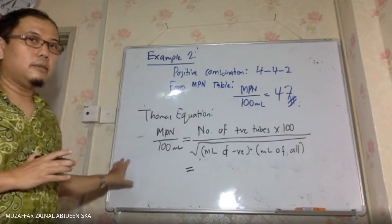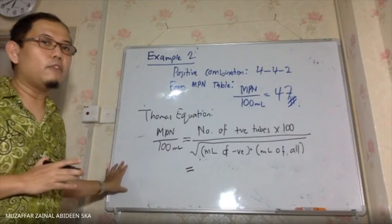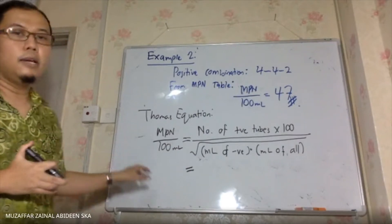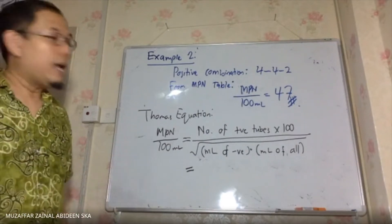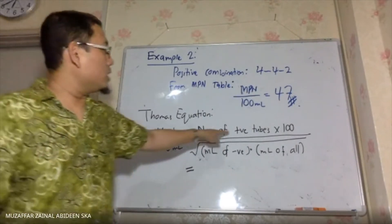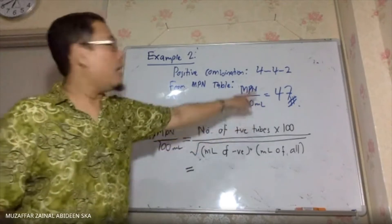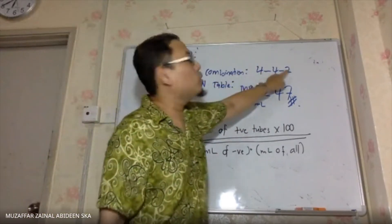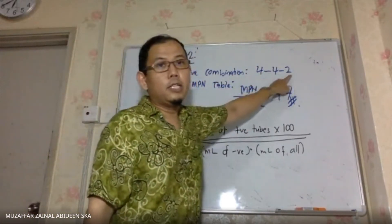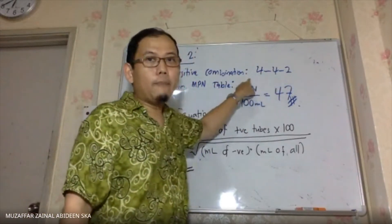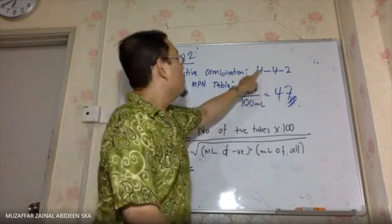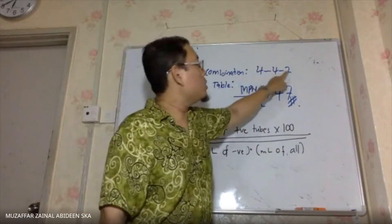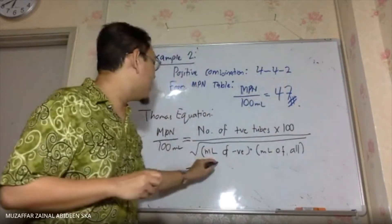Look at my whiteboard. The combination of positives is 4, 4, 2. So you add them together: 4 plus 4 is 8, plus 2 is 10. So you've got 10 positive tubes.